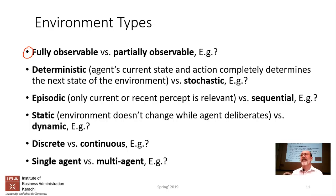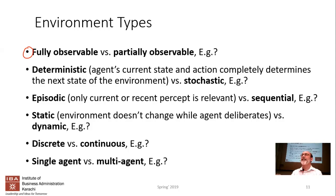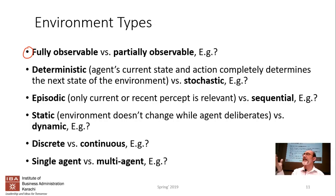One type of environment is fully observable, another is partially observable — hopefully there's nothing like completely unobservable. Can you give an example from the two classic situations we've discussed — a self-driving car and a medical diagnosis system — of a fully or partially observable environment?